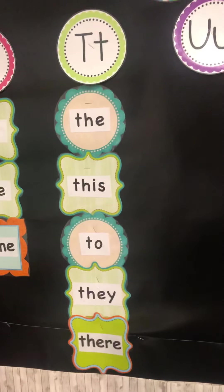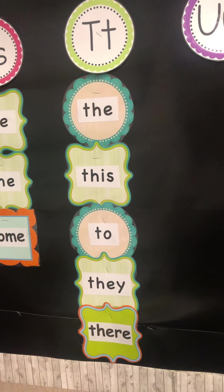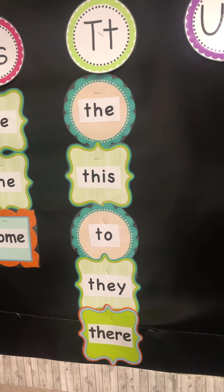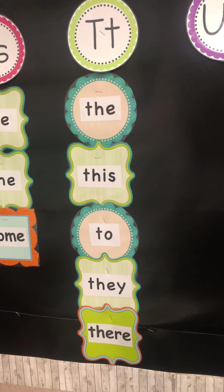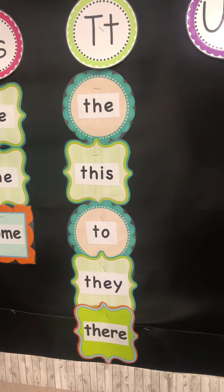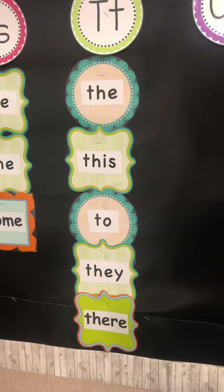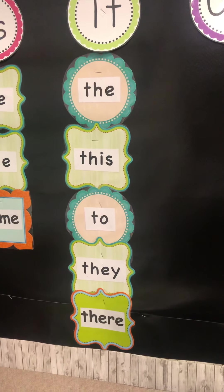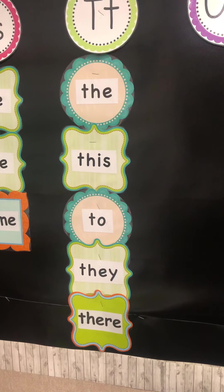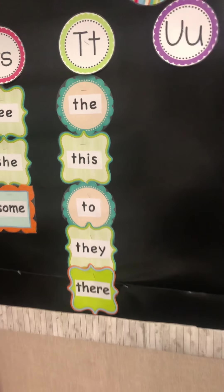We have a lot of T's — look at all those. Some of them are T-H, though. The first one's T-H: 'the.' The next one's T-H: 'this.' Then 'to,' then T-H: 'they,' and T-H again: 'there,' like over there.